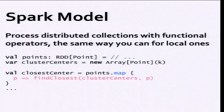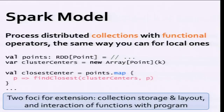Let's go back to what we had in the Spark model. The core idea is that you want to process distributed collections with functional operators that work the same way they do on local collections. At the bottom I have a code example — something you might write to implement k-means. You have 'points', which is an RDD of data points, a distributed collection, and some cluster centers as a local variable with the current centers.